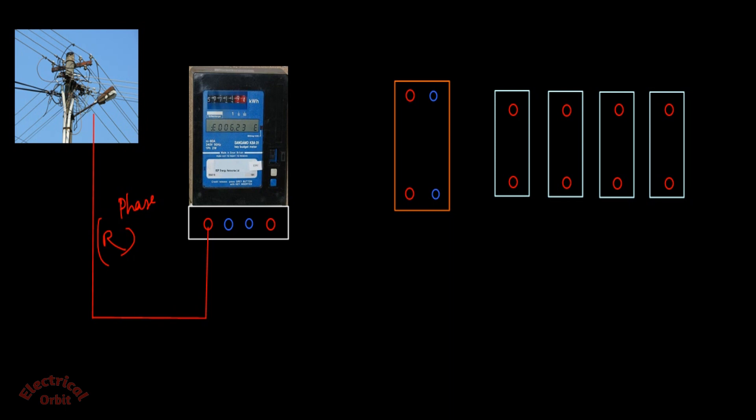Now we have to connect the neutral from the pole to the energy meter like this. The orientation of phase and neutral connection in energy meter is: this is phase, this is phase, and this is neutral, this is another neutral.